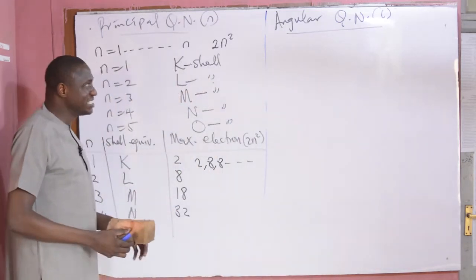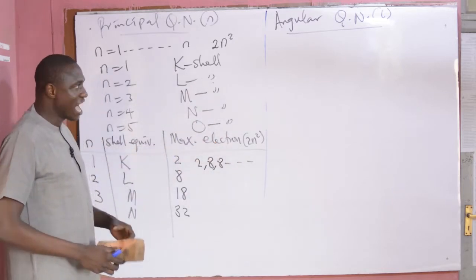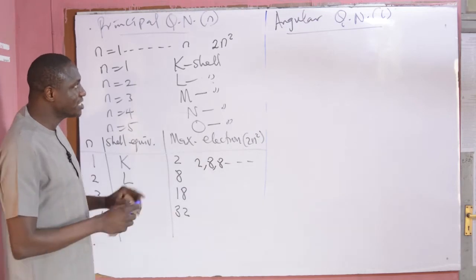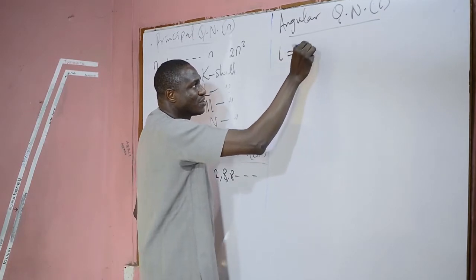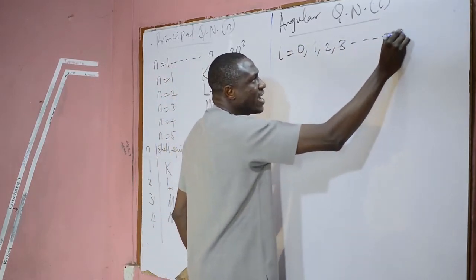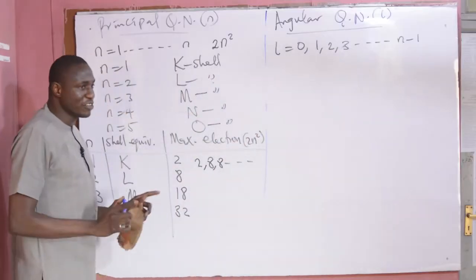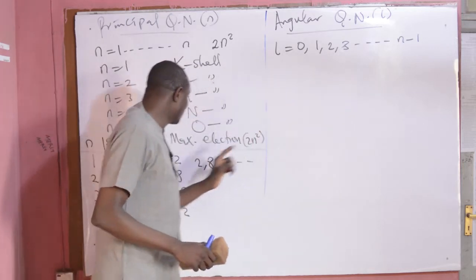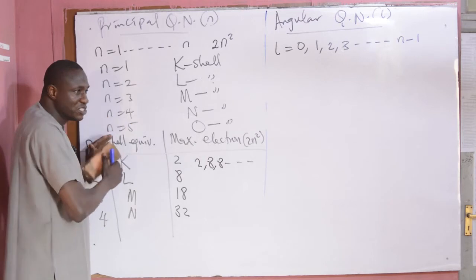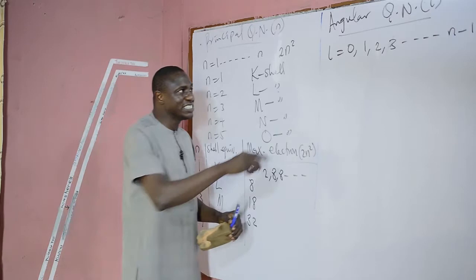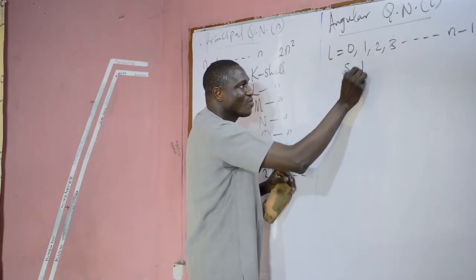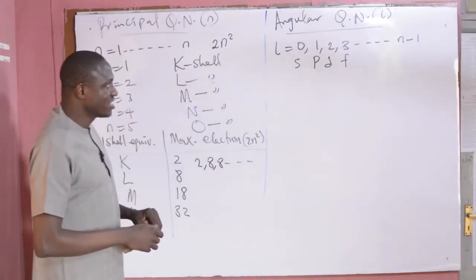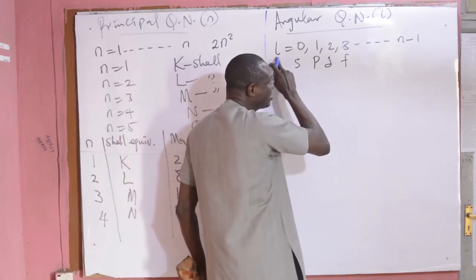The angular quantum number indicates the number of sub-shells in a particular shell — how many sub-shells can be found in a shell of an atom, and how many electrons can occupy each sub-shell. The angular momentum takes values of 0, 1, 2, 3, up to N minus 1, where N is the principal quantum number. To know how many sub-shells are in a shell, subtract 1 from the value of N and start from 0 up to that number. The designation of L is: 0 stands for S, 1 for P, 2 for D, 3 for F, 4 for G sub-shell, and so on.